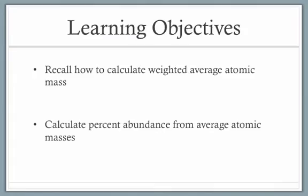We'll start with a quick list of learning objectives. The first is to recall how we were able to calculate weighted average atomic masses from our previous video. We'll go over that very quickly with the equation. And then secondly, we'll talk about how to do the reverse calculation—how to start with the average atomic mass and then calculate the percent abundances of the individual isotopes.